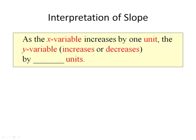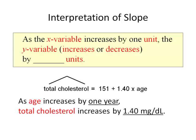Let's apply this to our cholesterol model. The regression equation is: predicted total cholesterol equals 151 plus 1.40 times age. We interpret the slope by saying: as age increases by one year, total cholesterol increases by 1.40 milligrams per deciliter.